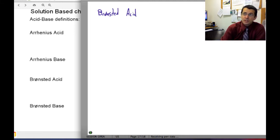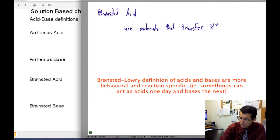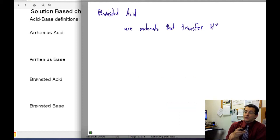Bronsted-Lowry acids and bases, rather than being something that has an H+ that it donates, Bronsted acids are materials that transfer H+. The Bronsted-Lowry definition is much more active, much more procedural, much more of a situational definition. We have to look at how it behaves. Bronsted acids transfer H+, whereas a Bronsted base is something that accepts H+.